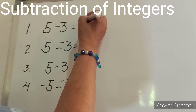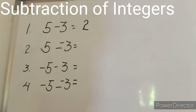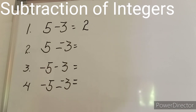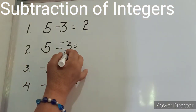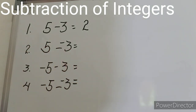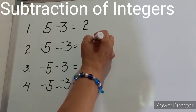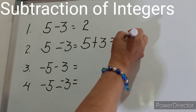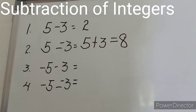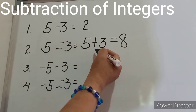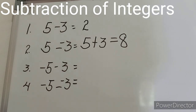Number one: five minus three is equal to two. But in number two, we have five minus negative three. By the way, in subtraction the number being subtracted is called the subtrahend, and we are removing it from the minuend. So this will become five plus three and the result is equal to eight. Do you see the changes? The given negative three becomes positive three, and the operation subtraction becomes addition.